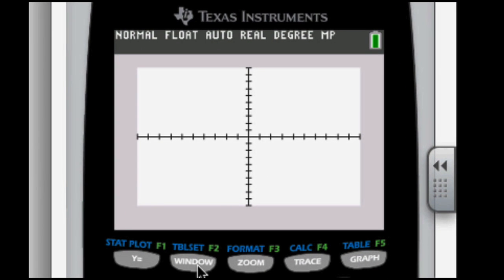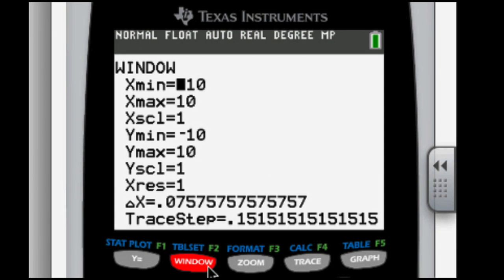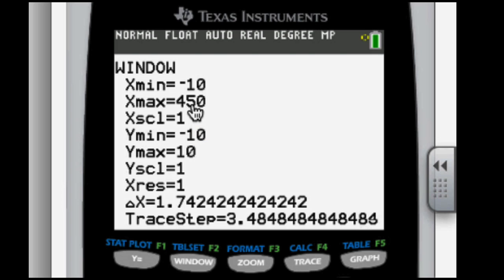First, let's go to Window. We know that we're going to have an X value of 400, or we're expecting an X value of 402.48 feet. So let's set the maximum value, let's say, to 450. I'm not quite sure how high the arrow travels at this moment, so let's set the maximum height to 300.